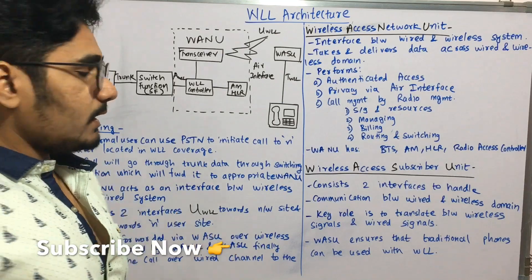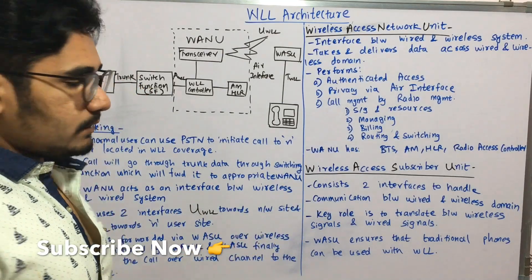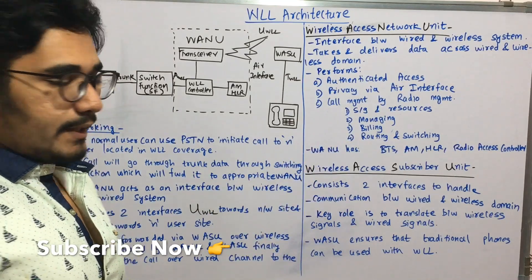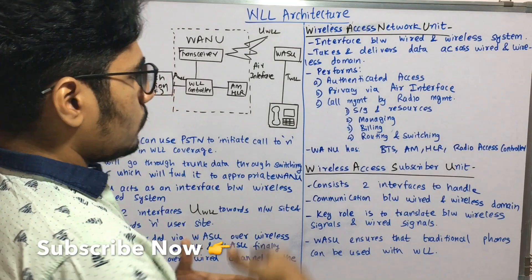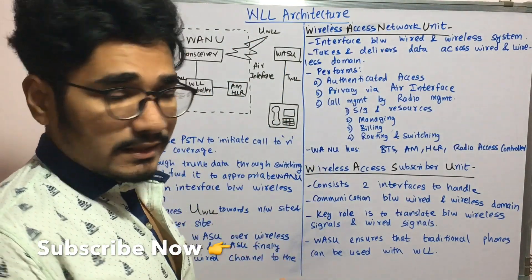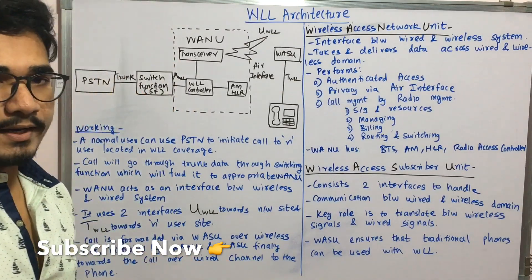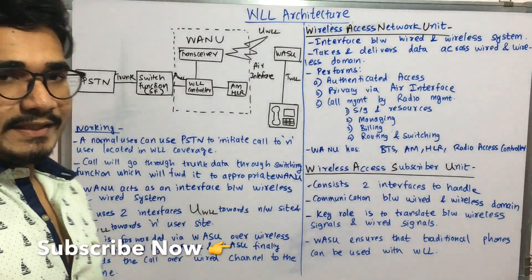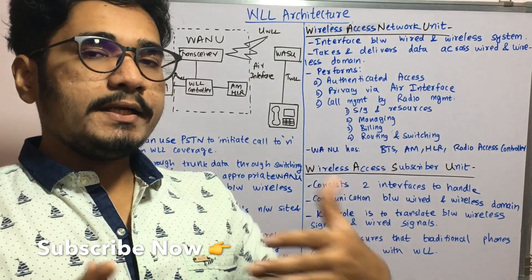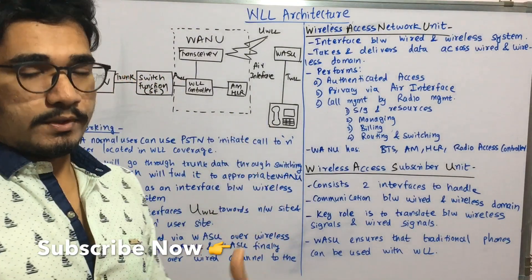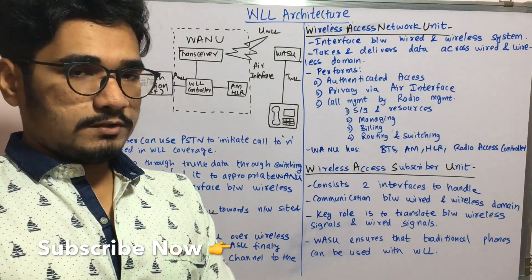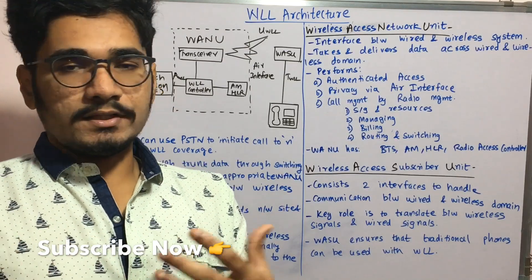Next, the Wireless Access Subscriber Unit (VASU) is in the wireless domain. It consists of two interfaces to handle communication between the wireless and wired domains. The key role of VASU is to translate between wireless signals and wired signals. Whenever data is coming in, it finds the appropriate encoding mechanism and translates it into the wired system so the end user can understand what is being spoken.